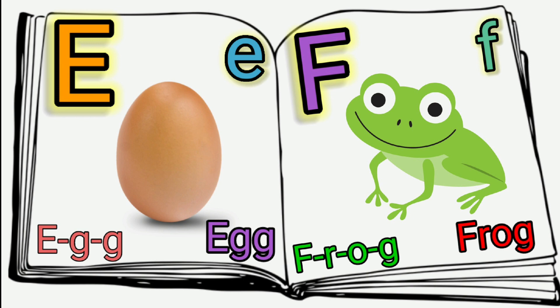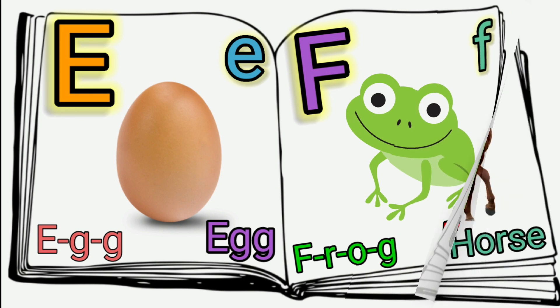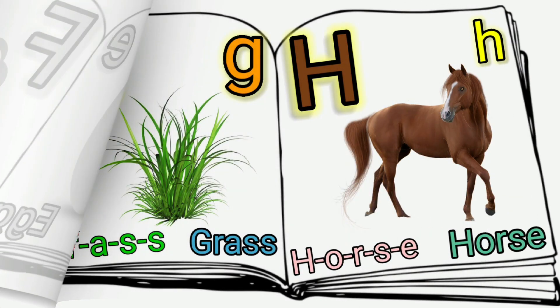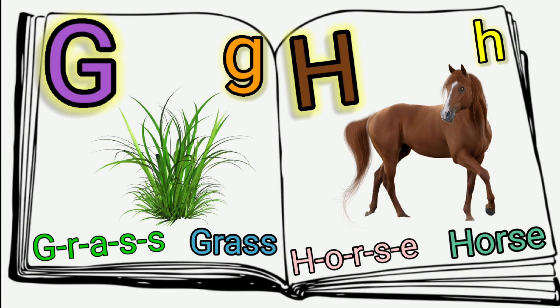G. G is Grass — G, R, A, S, S — Grass. G is Grass. H. H is Horse.